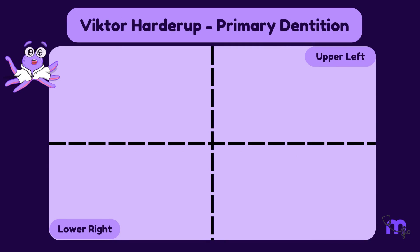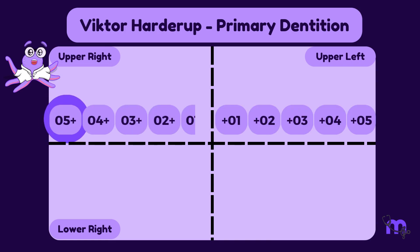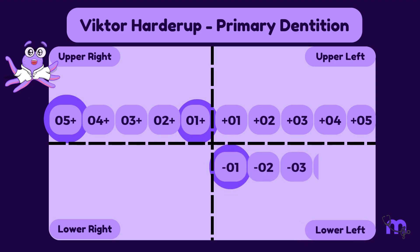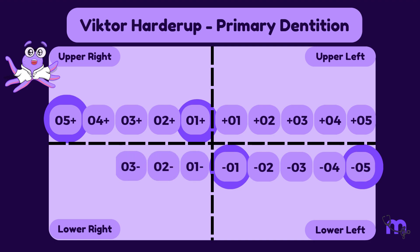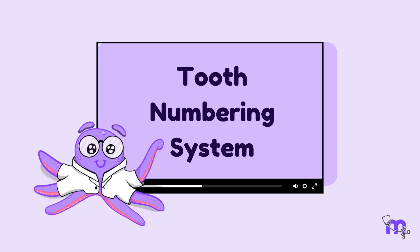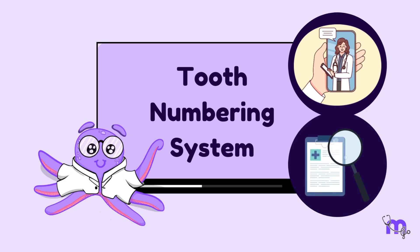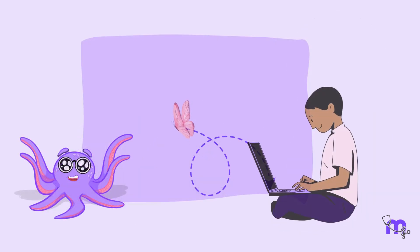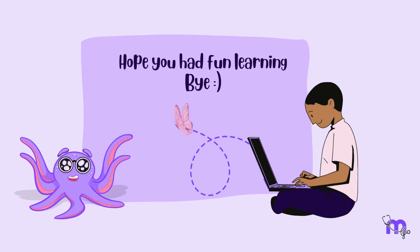For primary teeth in the Haderup system, the numbering was structured as follows: upper right from 05+ to 01+, and lower left from −01 to −05. It's worth noting that this system continues to be taught in Denmark. We hope this video helped you understand the numbering systems used for teeth, which is useful for communication and documentation in clinical practice. With that, we come to the end of this video. We hope you had fun learning with us.